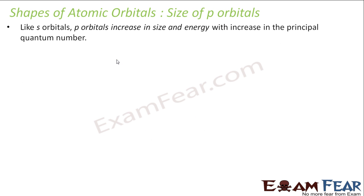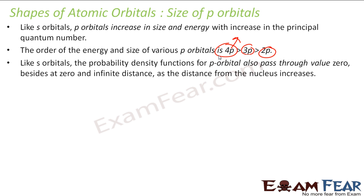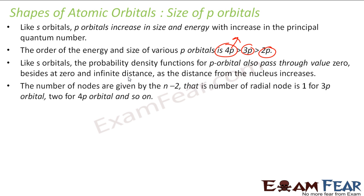Like S orbitals, P orbitals also increase in size and energy with the increase in principal quantum number N — that is 2P, 3P, 4P. The probability density for P orbitals also passes through zero at certain points, and those are called nodes. The number of radial nodes for P orbitals is N minus 2, because the general formula is N minus L minus 1 and for P orbitals L=1.